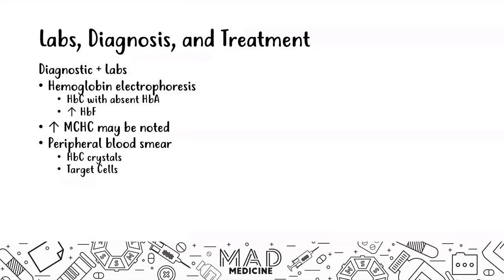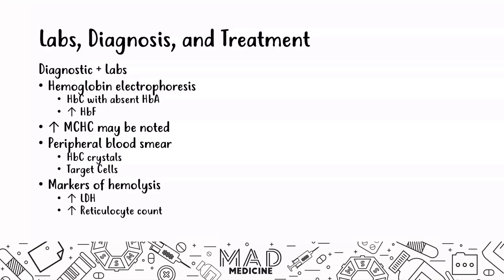When it comes to markers of hemolysis in these patients, because it is extravascular, you're not really going to see a decrease in haptoglobin or an increase in serum hemoglobin concentration since hemoglobin is not being released into the blood. But you are going to see an increase in LDH, an increase in reticulocyte count greater than 2%, and indirect bilirubinemia.